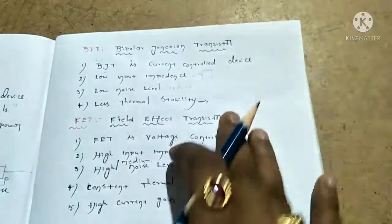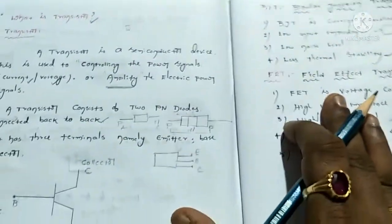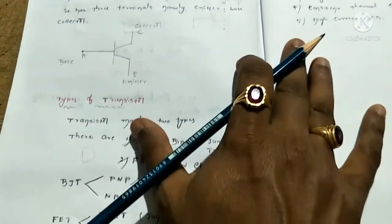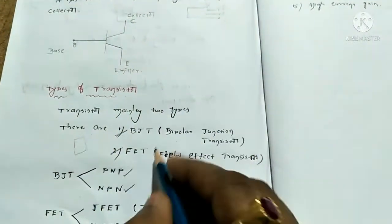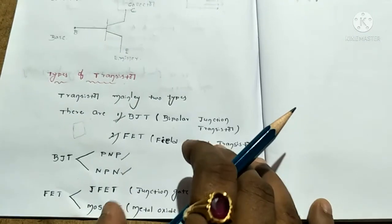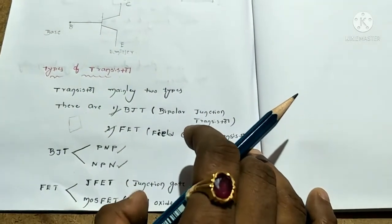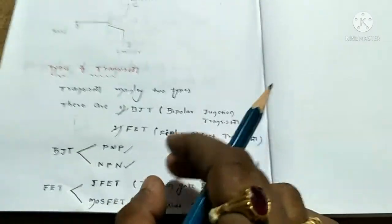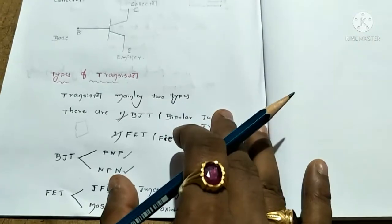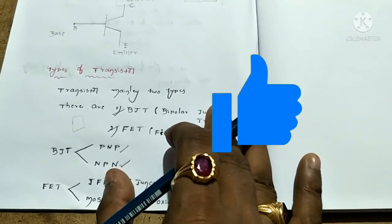This is the difference between BJT and FET. In the next class, we will cover PNP and NPN. JFET and MOSFET will also be covered in class. The characteristics are also important for exams, and those will be covered as well.